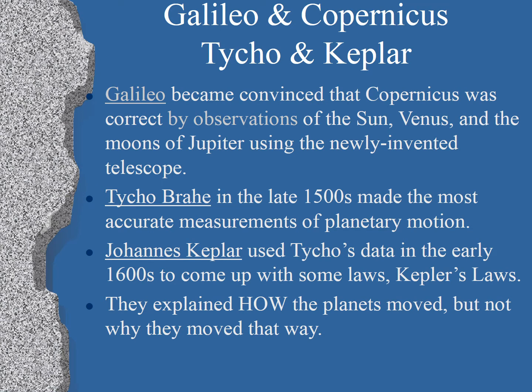A little later, Galileo was convinced that Copernicus was correct because he was observing the Sun and Venus and the moons of Jupiter with his newly invented telescope. Another guy by the name of Tycho Brahe in the late 1500s made a whole bunch of measurements of planetary motion. Then, a few years later in the early 1600s, a man by the name of Johannes Kepler used Tycho Brahe's data to come up with some special laws, which we call Kepler's laws. They explained very precisely how the planets moved. The problem is they didn't explain why they moved the way they did.